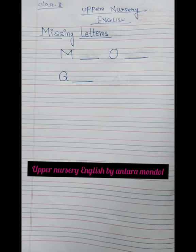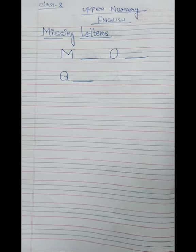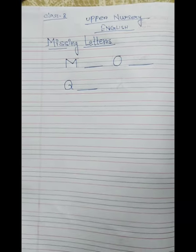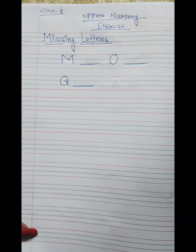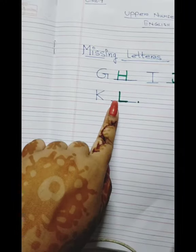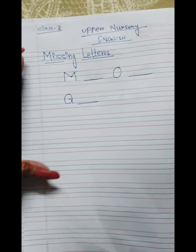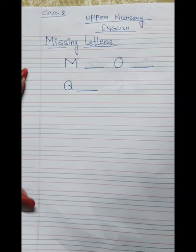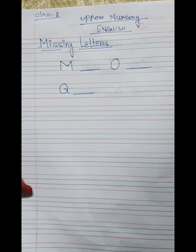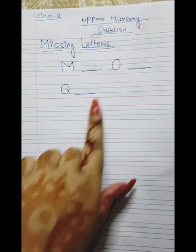Good morning children. I am again back with your class of English for Upper Nursery. In your previous class, I taught you till the letter L in missing form. Today I will start with the rest of the letters, also in missing form.